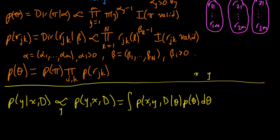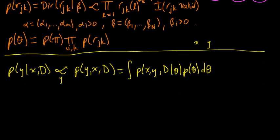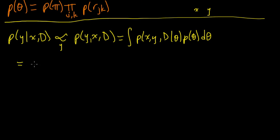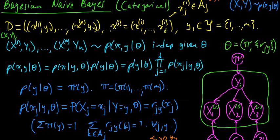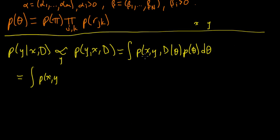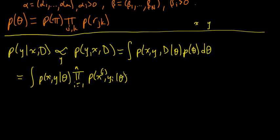Now let's use the Naive Bayes conditional independence assumptions. Since each data point (X_i, Y_i) is conditionally independent of the others given θ, the joint factors as: P(X, Y | θ) times the product over i from 1 to n of P(X_i, Y_i | θ), times P(θ). The new test point and all data points are all conditionally independent given θ.